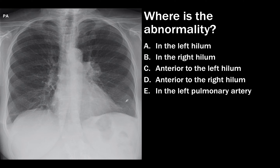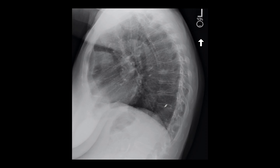The next question is: where is the abnormality? If you identified the hilum overlay sign, this should be easy — it's not in the left hilum; it's either anterior or posterior to it. C is the correct answer. On the lateral view, you can clearly see an area of mass-like consolidation, and it is anterior to the hilum.